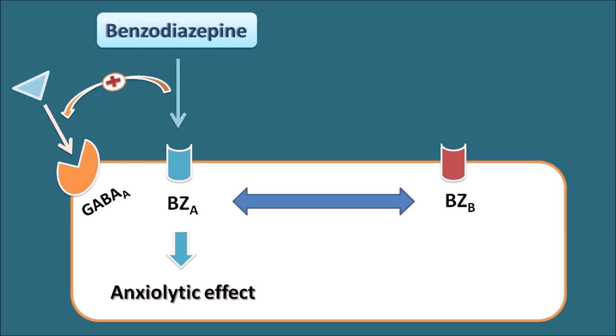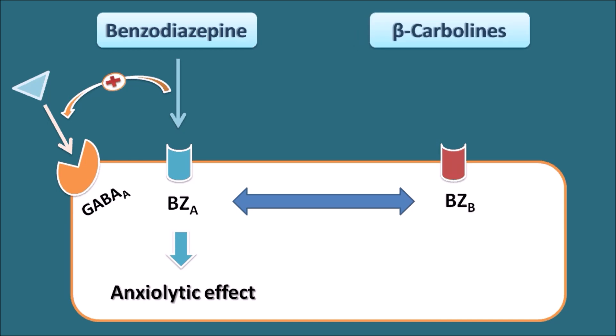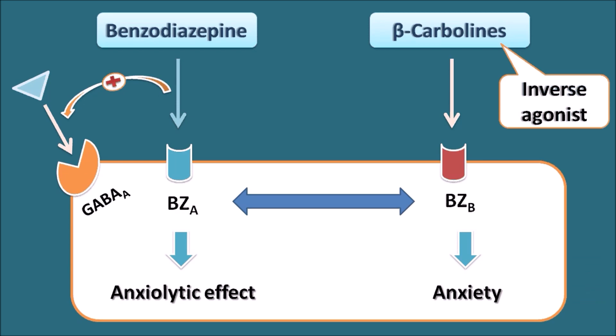Benzodiazepines do not act on the benzodiazepine-B conformation, but a few chemicals like the beta-carbolines can bind to this benzodiazepine-B conformation, thereby they increase anxiety. So the benzodiazepine-A conformation decreases anxiety whereas the benzodiazepine-B conformation increases anxiety. Benzodiazepines mainly act on the benzodiazepine-A conformation, but beta-carbolines only act on the benzodiazepine-B conformation. That's why benzodiazepines are acting as agonists whereas beta-carbolines act as inverse agonists, because once they bind they produce the opposite effect to whatever the agonists produce.